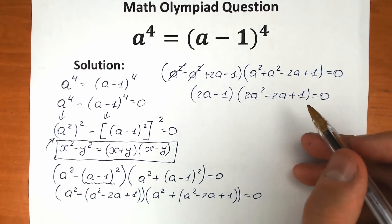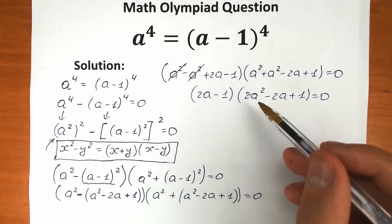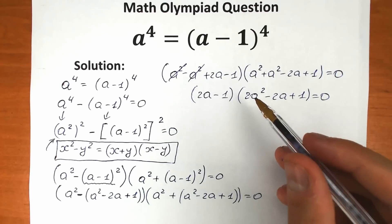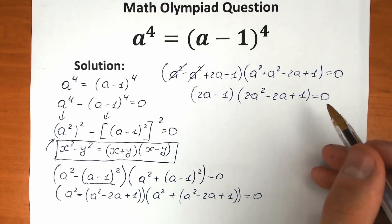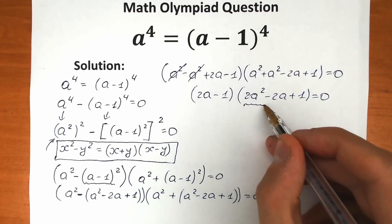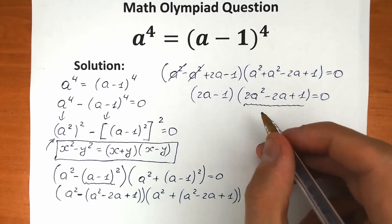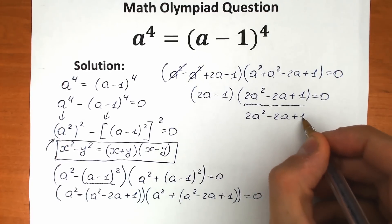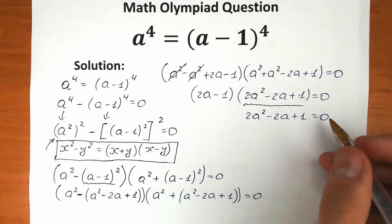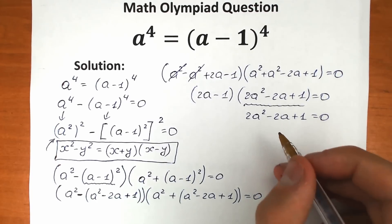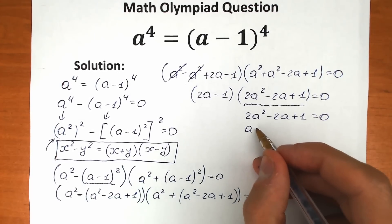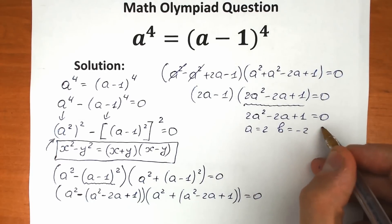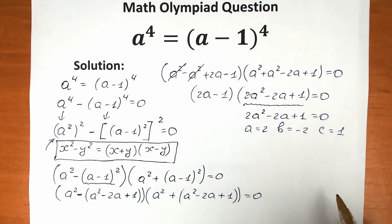We have a product of two parentheses equal to zero, which means one parenthesis equals zero. So either the first parenthesis is zero or the second is zero. Let's start with the second: 2a squared minus 2a plus 1 equals zero. We identify coefficients: a equals 2, b equals minus 2, and c equals 1.